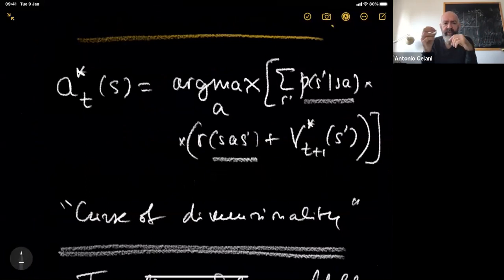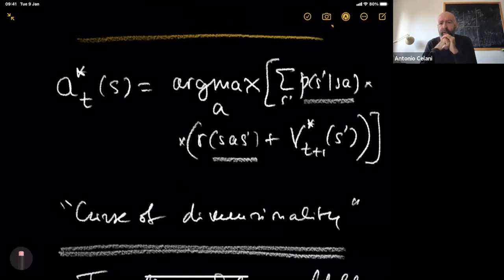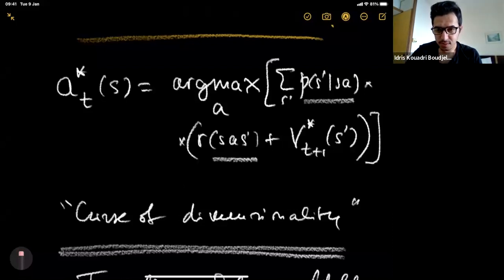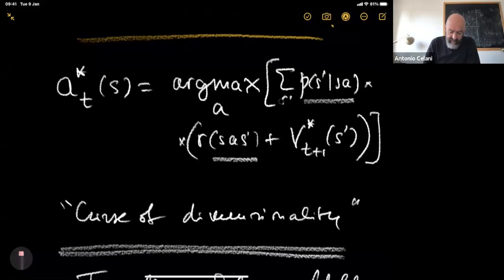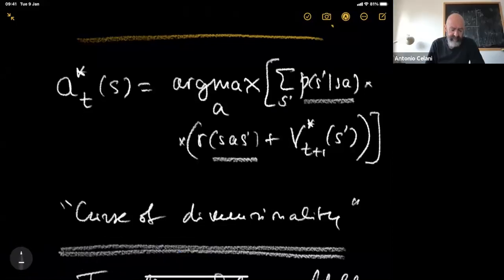Eventually what you come up with is a set of optimal actions to take for each state at each time, which means we have found a way to solve our problem. If we are interested only in optimal decisions, we can erase all information about values, which is also memory-efficient. Nevertheless, in terms of actual computation this is pretty heavy, especially when the number of states and actions becomes very large and the horizon is long — the problem soon becomes intractable. Note: the sum in the Bellman equation is over s prime.